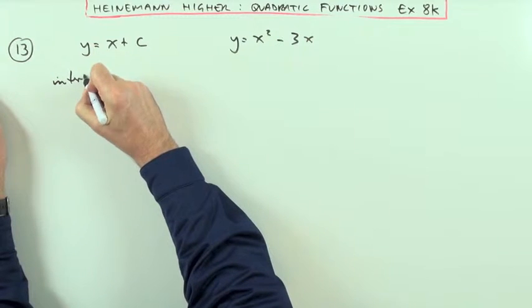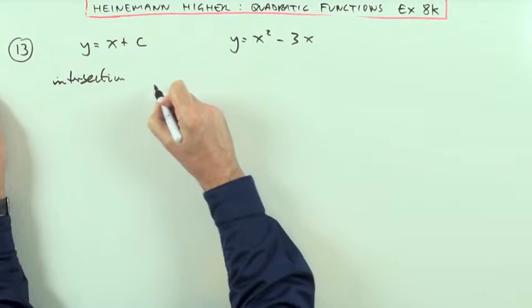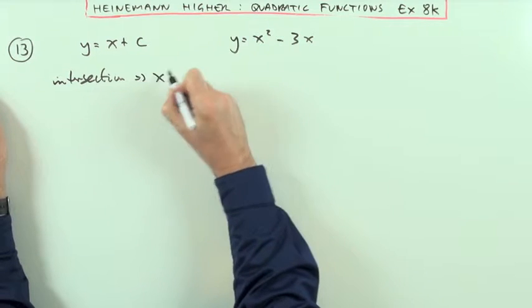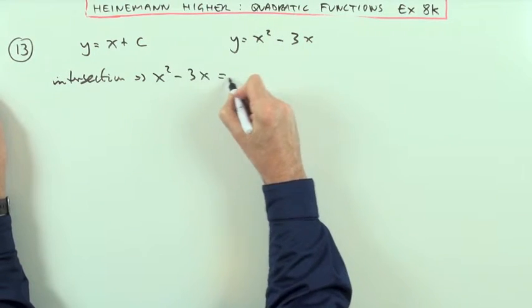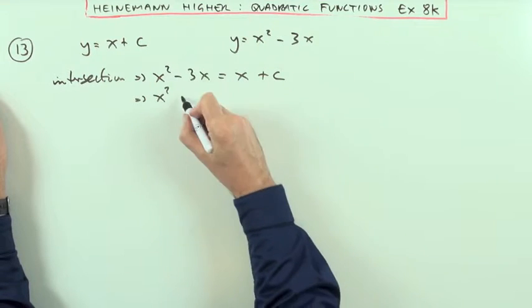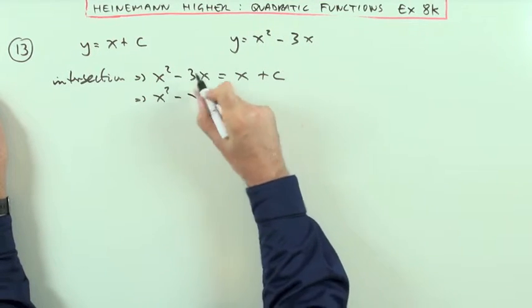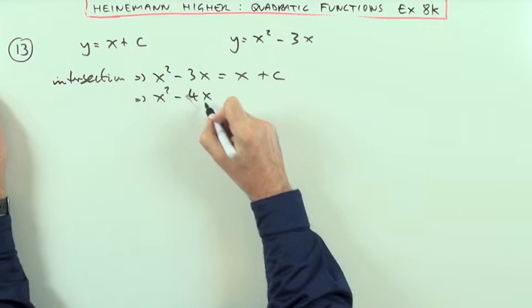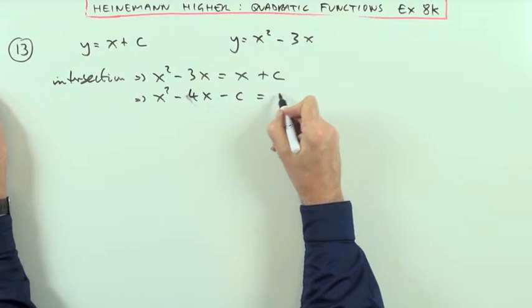So if you're looking for an intersection I would substitute the two equations in which case I'm going to have x squared minus 3x is equal to x plus c. So x squared minus 4x minus c should equal 0.